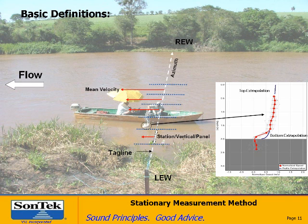On the right-hand side of the figure, you see a plot of velocity versus depth. The red dots and red line are the actual velocity data collected by the instrument. The blue line represents the top and bottom extrapolation method. This is very similar to the moving boat technology because it is the same technology — we're just using it at a fixed position.